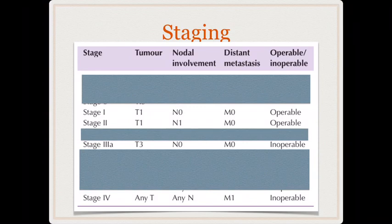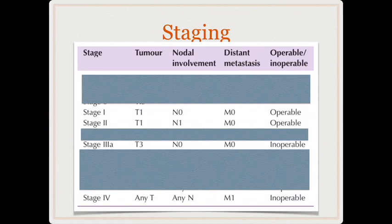Most tumors are staged using TNM staging — T stands for tumor characteristics and size, N for nodal status, and M for metastatic status. You don't need to remember in-depth staging, but what you must remember is that stage 1 and stage 2 tumors are operable, while stage 3 and stage 4 are inoperable. Our endeavor should be to diagnose patients in stage 1 or 2 by ordering CT scan early, maintaining a high index of suspicion.